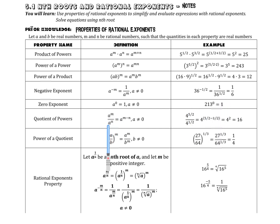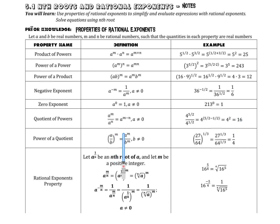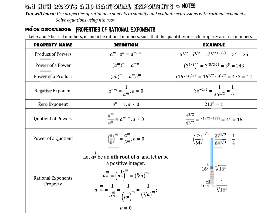If we are dividing a to the power of m over a to the power of n, since they have the same base, we can subtract those exponents. So 4 to the 5/2 divided by 4 to the power of 1/2 gives us 4 to the power of 2, which is 16. Similarly, even with a quotient, the exponent on the outside applies to everything inside, so 27 over 64 all to the 1/3 becomes the cube root of 27 over the cube root of 64, which is 3/4.